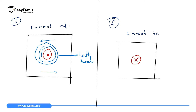We draw at least three field lines. Below this wire the magnetic field moves in the direction where the left hand is pointing. Then above the wire, connecting the loop, it moves the other way. We have determined the direction of the magnetic field along a wire moving out of the screen. Below the wire the magnetic field moves towards the swimmer's left hand, and above the wire it moves towards the swimmer's right hand.